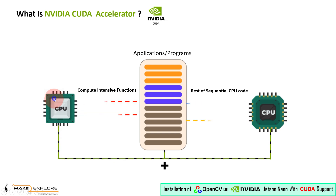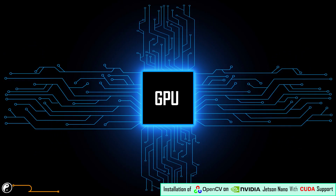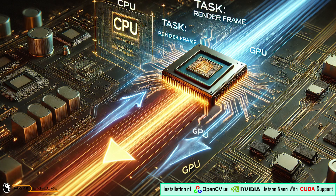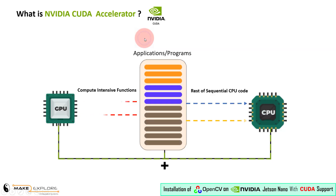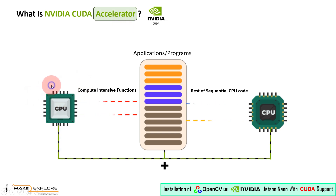A CUDA accelerator refers to the use of NVIDIA GPUs as specialized hardware accelerators to perform computational tasks faster than a traditional CPU. The term 'accelerator' highlights the GPU's role in speeding up specific types of computations, particularly those that can be parallelized.